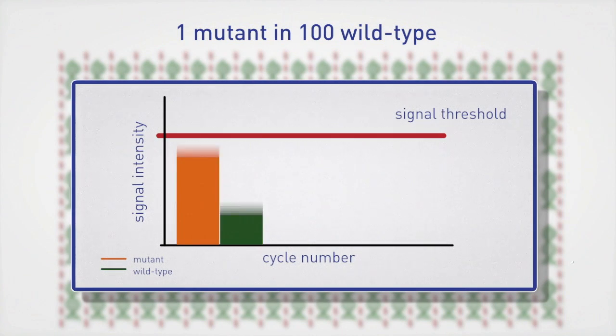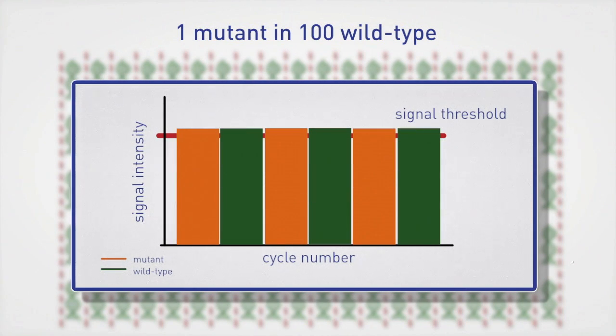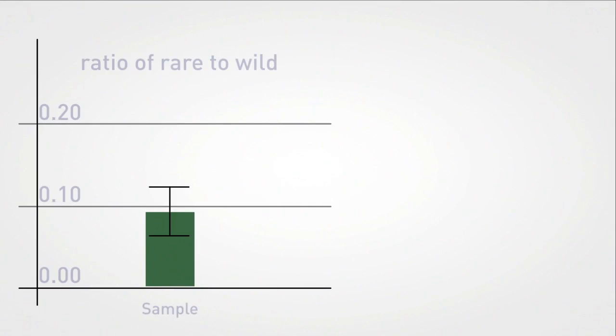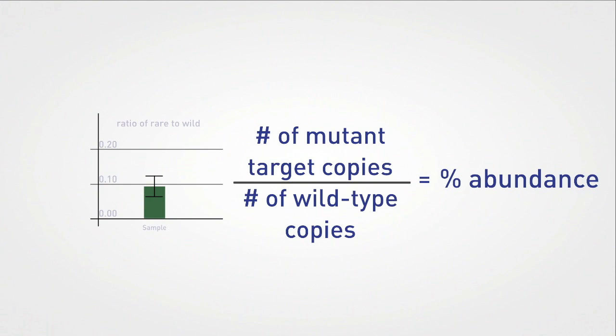If sufficient partitions are used, the reaction wells reach a point where the wild-type signal no longer overwhelms the mutant signal. In practice, the total count of each allele, mutant and wild-type, can be calculated and a ratio determined, since each data point is generated digitally.